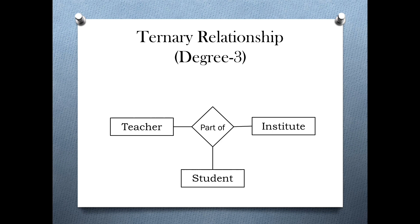Next is ternary relationship set, that is degree is equal to 3. Here in this example, the relationship set 'part of' relates three entity sets — teacher, student, and institute. As three entity sets have participated in this relationship set, its degree is 3, and hence it is called a ternary relationship set.